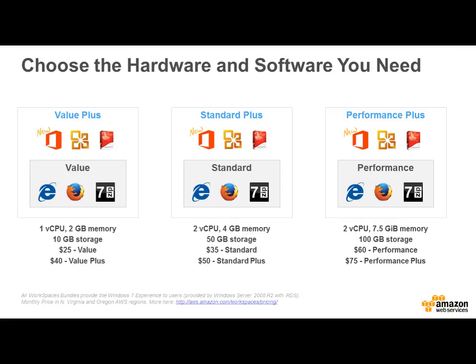You're going to get a few different options when it comes to picking your WorkSpaces. You've got Value and Value Plus — Value Plus adds your Office subscription, Adobe, and some Office 365 tools as well. You can choose from one CPU and two gigs of memory, all the way up to two CPUs and seven and a half gigs of memory. Later on in this presentation, we're going to touch on a fantastic opportunity with Amazon Web Services and TechSoup where you can get some credits.